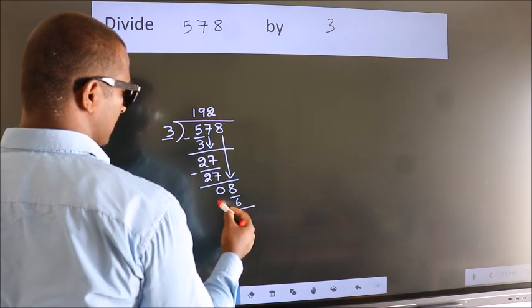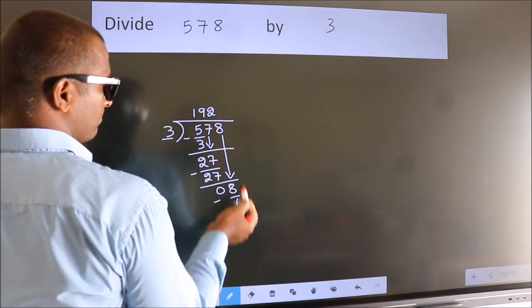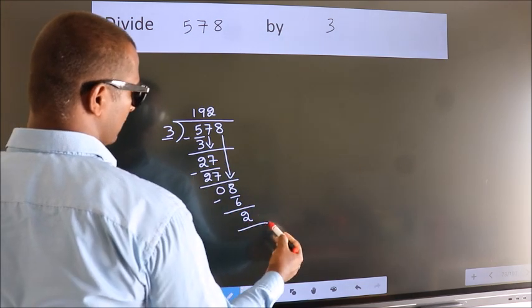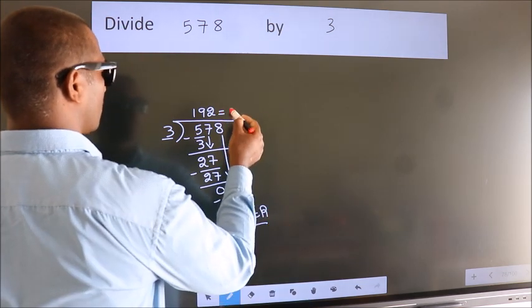Now, we subtract. We get 2. No more numbers to bring down. So, we stop here. This is our remainder. This is our quotient.